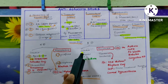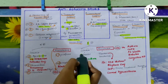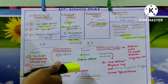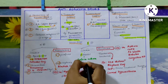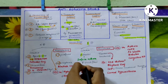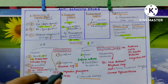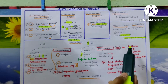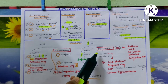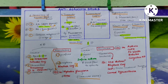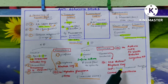Now coming to beta blockers — again classified into selective and non-selective. In selective, the name starts with B itself: betaxolol. Betaxolol is safe in asthma, and one important point is that betaxolol increases blood flow to the optic nerve. For non-selective beta blockers, they are generally contraindicated in asthma, whereas selective betaxolol is safe in asthma. Non-selective includes timolol and levobunolol.